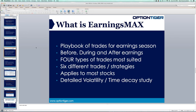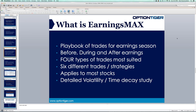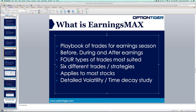OptionTiger released Earnings Max about three or four months ago. We're right now in perfect timing for this product, because earnings season just kicked off — Alcoa reported this past week, and in the upcoming week we have big financials like JP Morgan, Citigroup, and even Google reporting. Earnings Max looks at four types of trades most suited for earnings season. You can put some trades before, some during, and some after the earnings event.